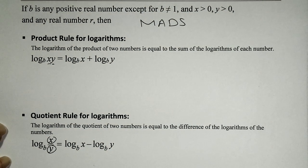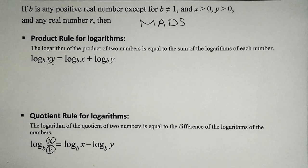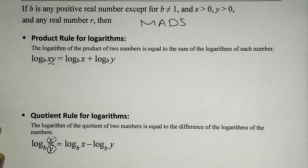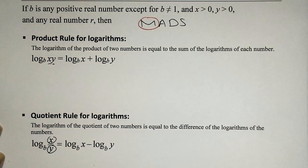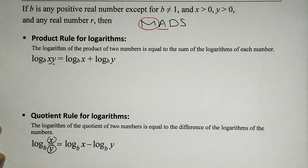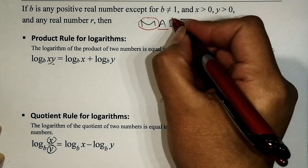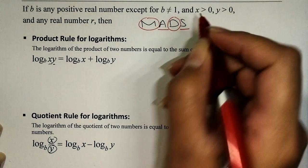So what does my silly memory aid have to do with the product and quotient rule for logarithms? It actually has a lot to do with it. If the argument is a product — multiplication — then when we expand it, we expand it as an addition. But if the argument is a quotient — division — when we expand it, we expand it as a subtraction problem.